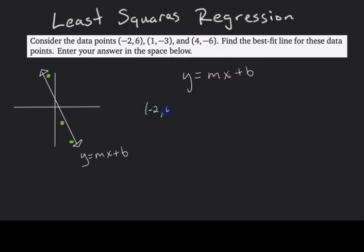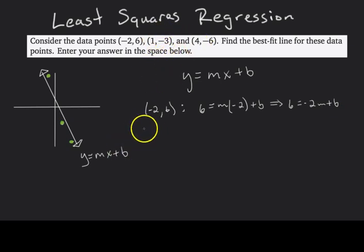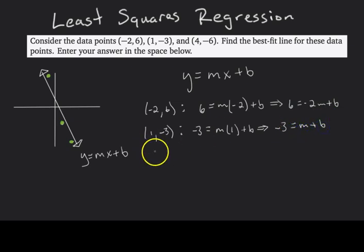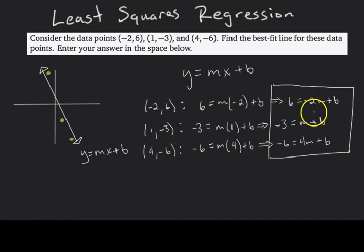The first data point is (-2, 6). Plugging that in for x and y: y = 6 when x = -2, so we get 6 = -2m + b. For (1, -3), plugging into y = mx + b gives negative 3 = m + b. We do the same for the third data point, and now we have three equations with two unknown variables m and b.